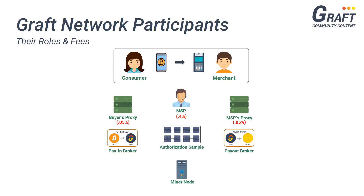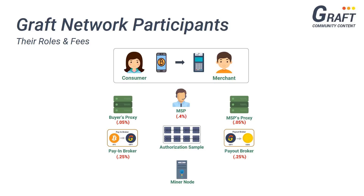Depending upon the payment method chosen by the buyer and the payout method chosen by the merchant, transactions on the Graft network may require the use of pay-in and pay-out brokers. Pay-in and pay-out brokers allow for the exchange of various cryptocurrencies as well as fiat currencies within the Graft network, and charge a fee of 0.25% every time an exchange is needed. All exchanges performed on the Graft network are both trustless and automatic and require the use of Graft's authorization sample — a group of eight supernodes which perform transaction authorizations and act as an arbitrator for any exchange performed on the network. The authorization sample charges a fee of 0.5% for every transaction, which is distributed evenly among all eight supernodes.